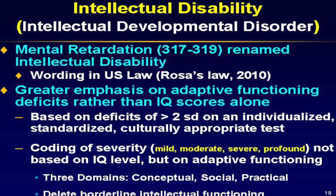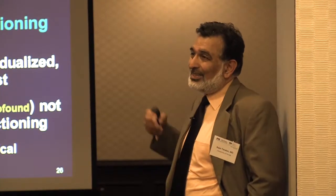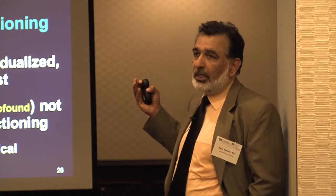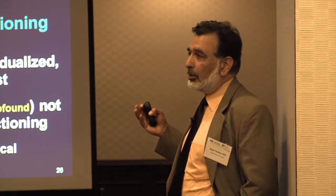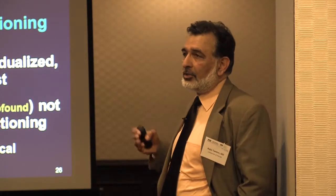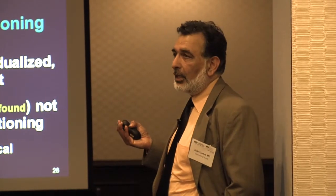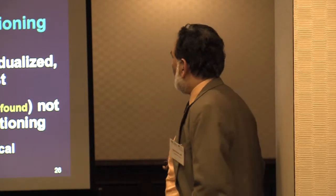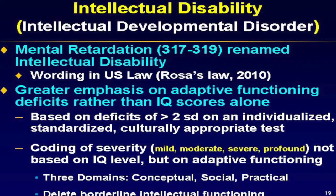Intellectual disability — and in ICD-11 the terminology is going to change to 'intellectual developmental disorder,' because everything has to have 'disorder' at the end in ICD-11. That terminology will change with ICD-11, which was postponed to 2016, though my expectation is we won't see it until 2018, because the field trials are taking longer than anticipated. Mental retardation has been renamed intellectual disability.